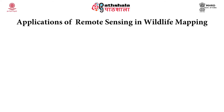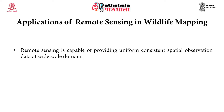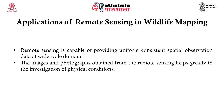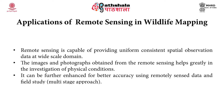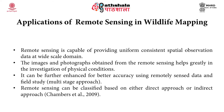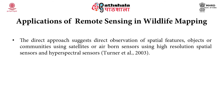Remote sensing is capable of providing uniform, consistent spatial observation data at a wider scale. Images and photographs obtained from remote sensing help greatly in the investigation of physical conditions. It can be further enhanced for better accuracy using remotely sensed data and field study — the multi-stage approach. Remote sensing can be classified based on either direct or indirect approach. The direct approach suggests direct observation of spatial features, objects, or communities using satellites or airborne sensors with high-resolution spatial and hyperspectral sensors.